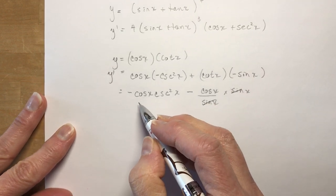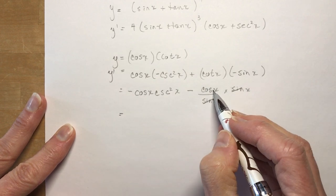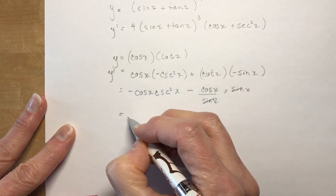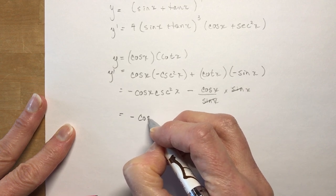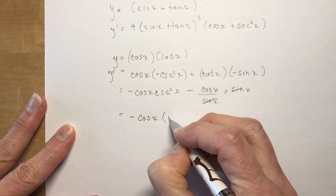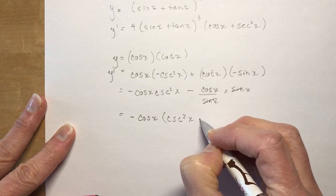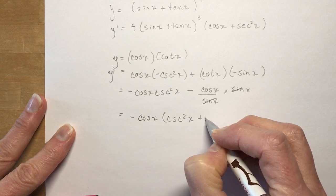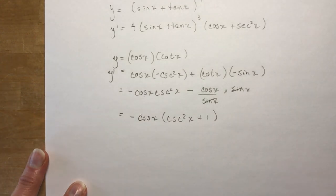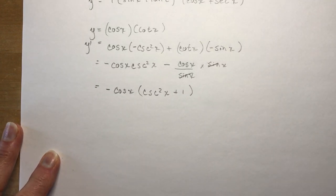This gives negative cos x · cosecant² x, and then since cotangent x equals cos x over sin x, multiplying by negative sin x simplifies to minus cos x. Factoring out negative cos x from both terms leaves us with negative cos x times (cosecant² x + 1).